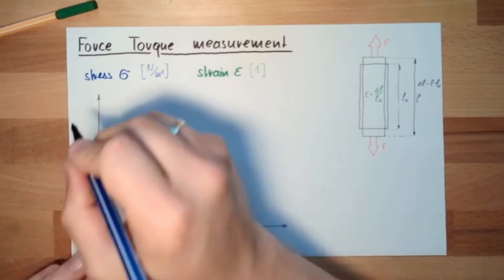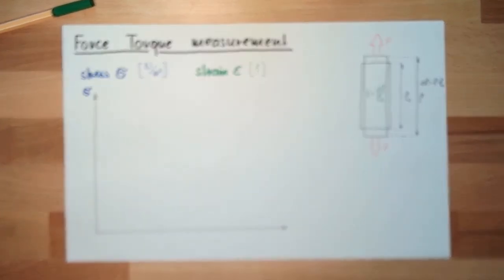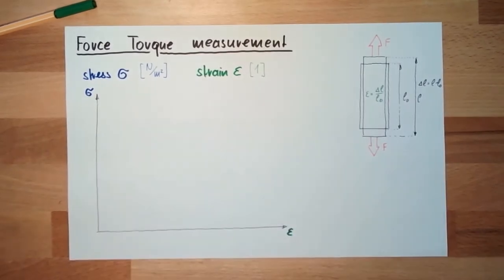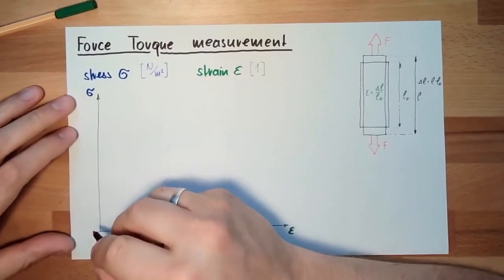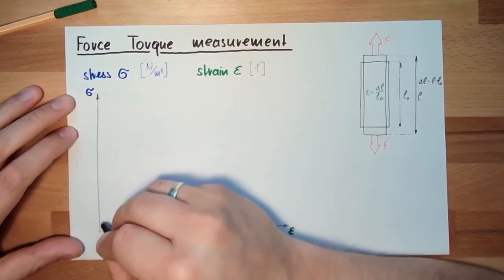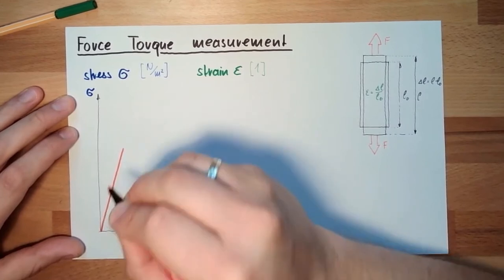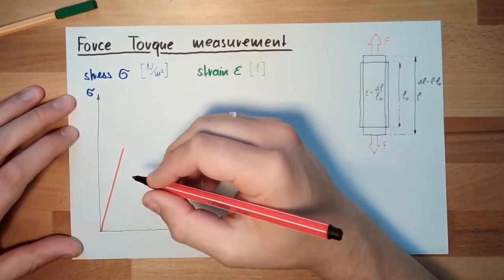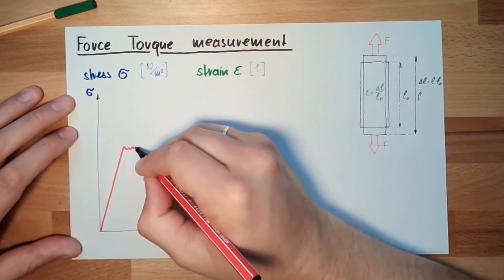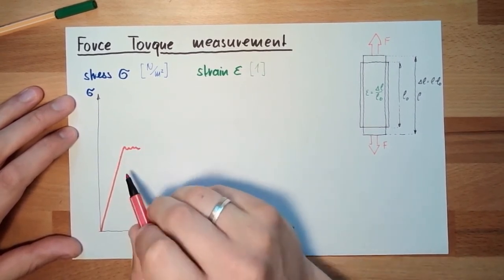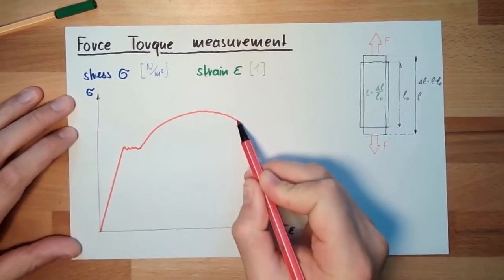Here we have the sigma, the stress. Here we have the strain. How does it look like? At the beginning, if I apply stress, it will deform and will get longer. Then at some point in time, at the so-called yield strength, Fließgrenze in German, this will then look like this.